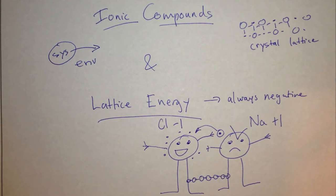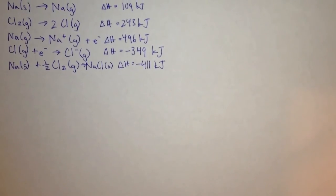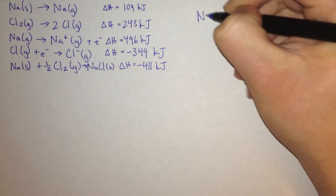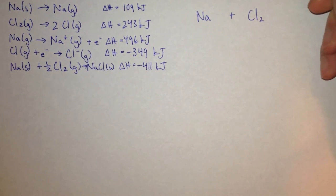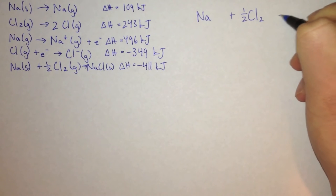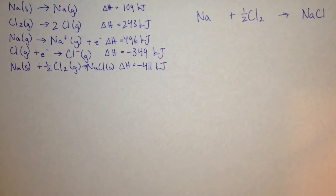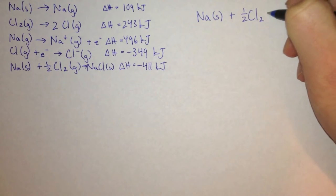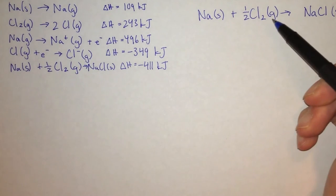With that in mind, let's try to write an equation for the reaction between sodium and chlorine. We take our sodium and our chlorine. Chlorine comes as Cl2 because it's a diatomic, and we only need one half of it because we only need one chlorine atom. That gives us 1 NaCl. At room temperature, sodium comes as a solid and chlorine comes as a gas, and in the end we want a solid NaCl — a solid salt.